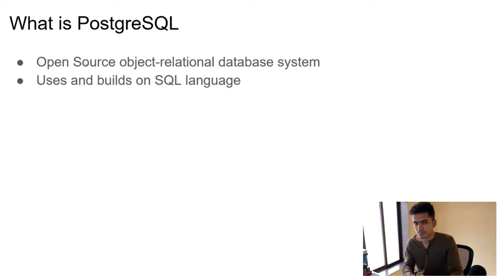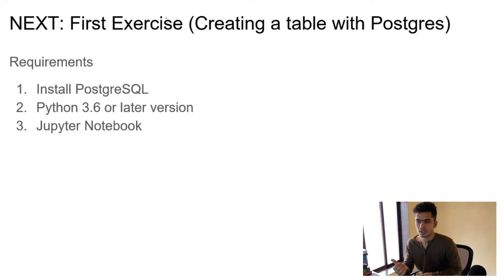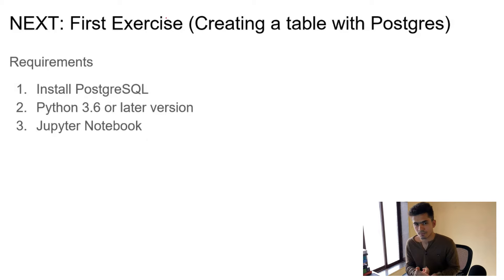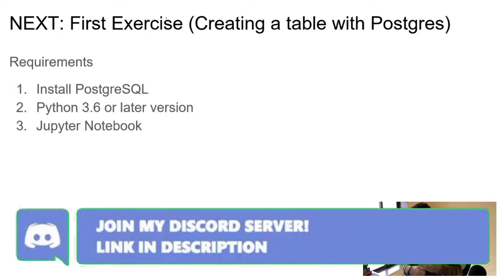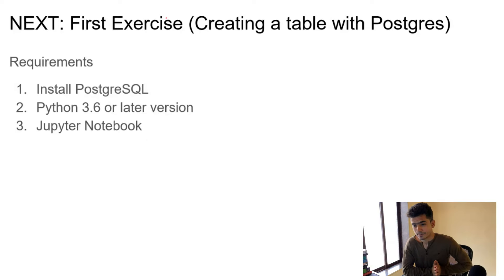We're going to use PostgreSQL, which is an open source object-relational database system that uses SQL language to query databases and tables. In the next video we're going to look at the first exercise of our project series. We will do it on PostgreSQL, write all the code in Python, and use Jupyter notebooks for ease of understanding. In that next video we'll learn how to create tables with PostgreSQL, and at the end of the video I will give you a data source online and ask you to build a relational model by yourself.